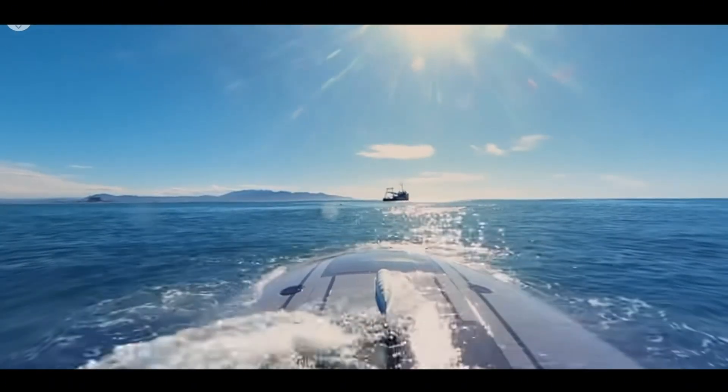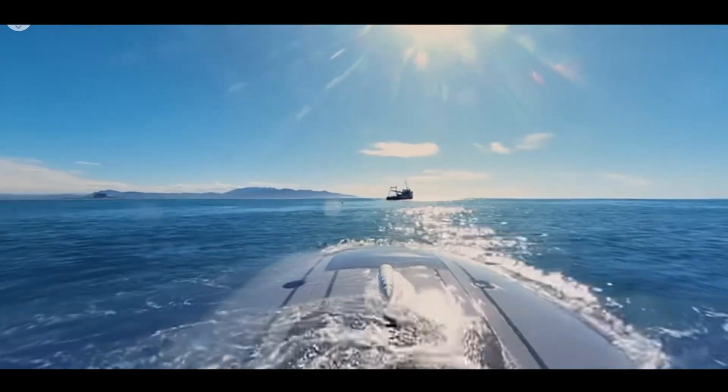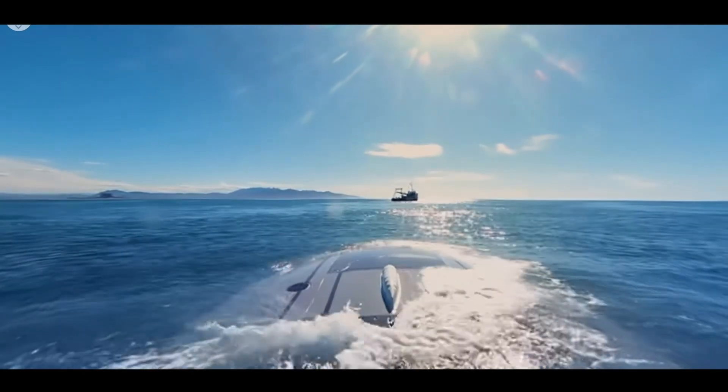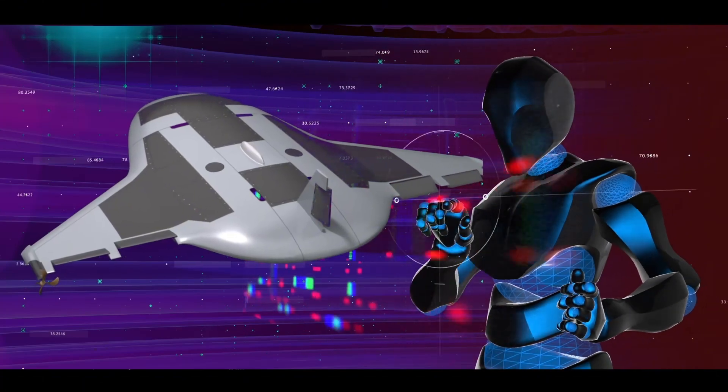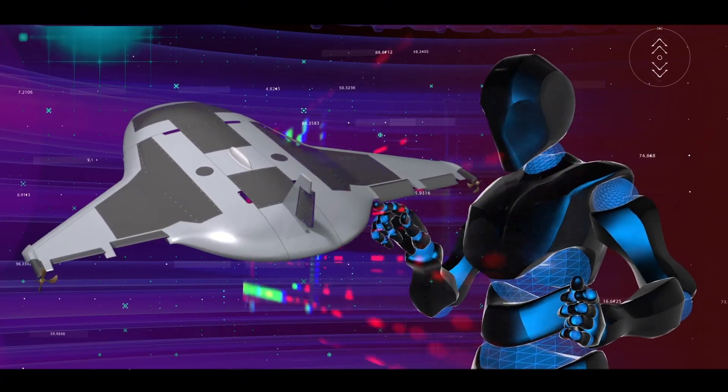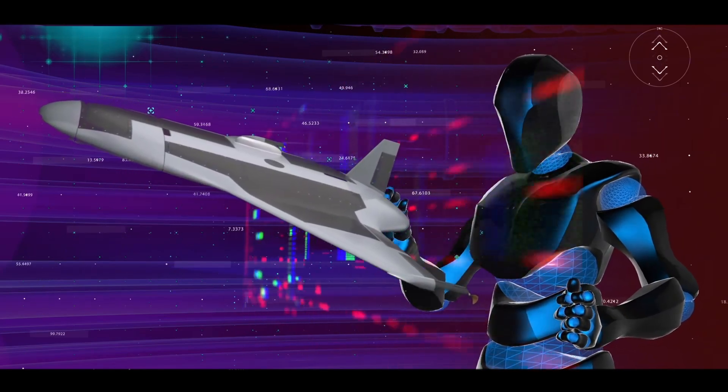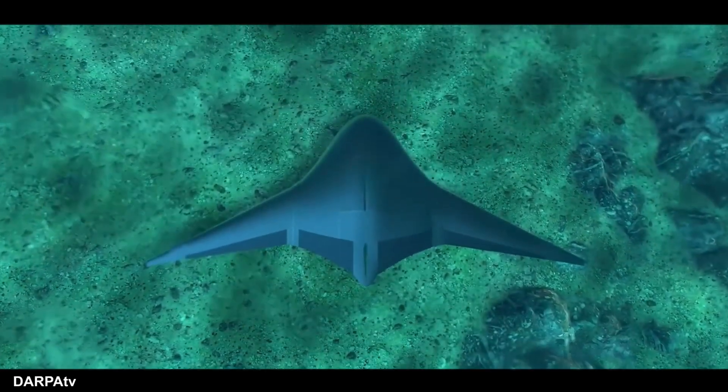As an AUV, the manta ray operates independently of direct human control, distinguishing it from remotely operated vehicles (ROVs) that require constant supervision. Leveraging artificial intelligence, the manta ray can execute pre-programmed missions or dynamically adapt to changing conditions in real time. This level of autonomy enhances its operational efficiency and allows it to undertake complex tasks in challenging underwater environments.